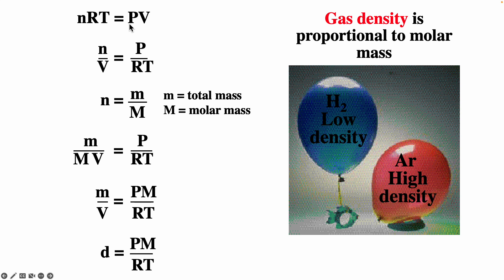Starting from PV = nRT, dividing both sides by V and RT gives n/V = P/RT. Since n = m/M (mass over molar mass), substituting gives m/(M×V) = P/RT. Multiplying both sides by M, and recognizing that mass over volume is density, we get: density D = PM/RT. So the density of a gas is equal to pressure times its molar mass over RT, meaning density is proportional to molar mass.